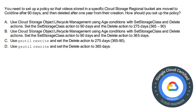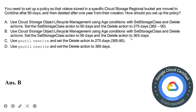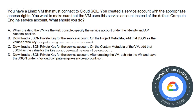Moving on to the next question. You need to set up a policy so that videos stored in a specific Cloud Storage regional bucket are moved to Coldline after 90 days and then deleted after one year from creation. The options both use Cloud Storage object lifecycle management with age conditions. Option A sets the delete action to 275 days (365 minus 90), while option B sets the delete action to 365 days. The correct answer is option B, since the files should be deleted after 365 days total.